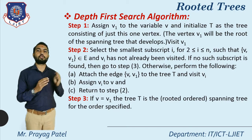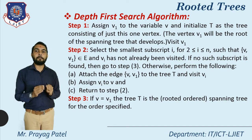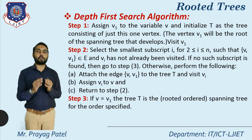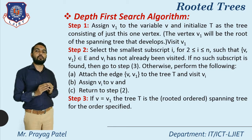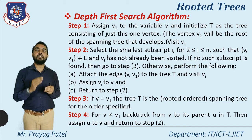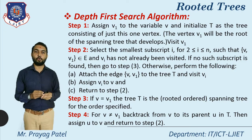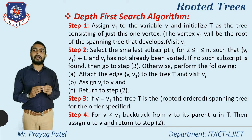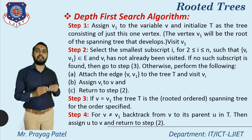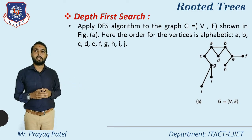Step 3: If no such subscript is found — meaning no child node is available — go to step 3. If v equals v1, the tree T is the rooted spanning tree for the specified order and we terminate. Step 4: For v not equal to v1, backtrack from v to its parent u in the tree T, assign u to v, and return to step 2. Repeat visiting the next child. This is the simple algorithm for depth first search.